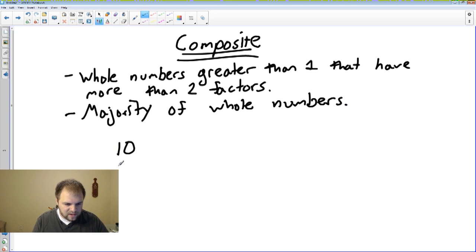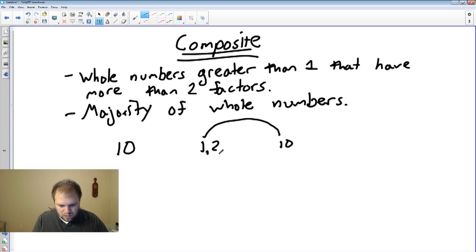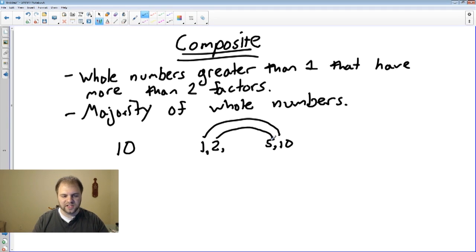Examples are 10. Because we know 10, if we do the factor rainbow, we can see that 10 has 1 and 10 as factors, 2 and 5 as factors. 1 and 10, 2 and 5, that's 4 factors. So we know it has 4 factors, so it has more than 2 factors, making it a composite number.